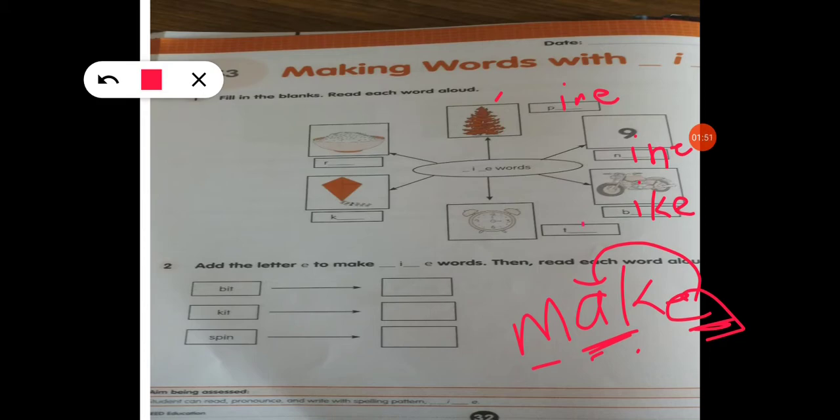Next one is time. E has given its power. I has given its own power, so it becomes not E sound. It's I, the letter name.